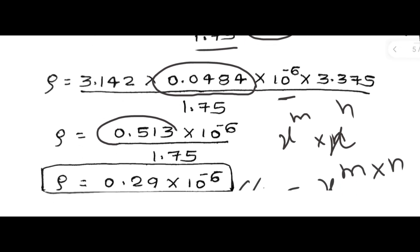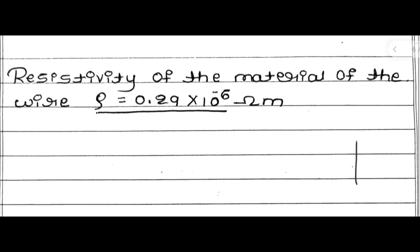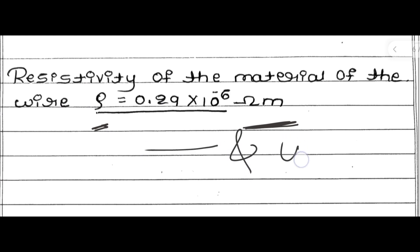This same value we should write in the result part. The result is: resistivity of the material of the wire, rho = 0.29 × 10⁻⁶ ohm meter. Ohm meter is the unit of resistivity of the material of the wire. We have to express the result in numerical value along with the unit — only then will we get 2 marks in the result part. By this, it completes the experiment for resistivity of the material of the wire. In the next video, I will come with another experiment. Thank you.